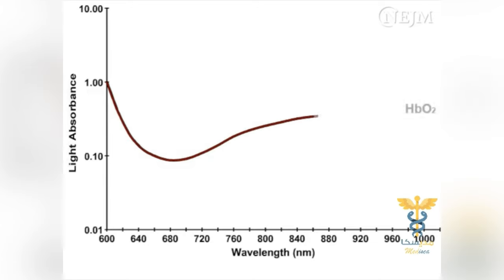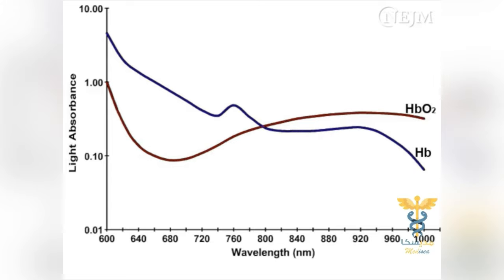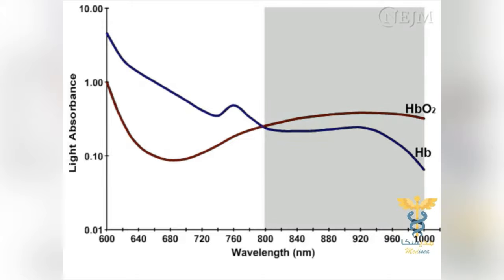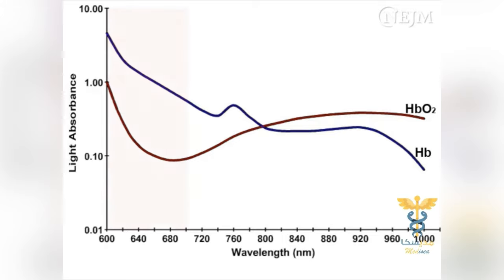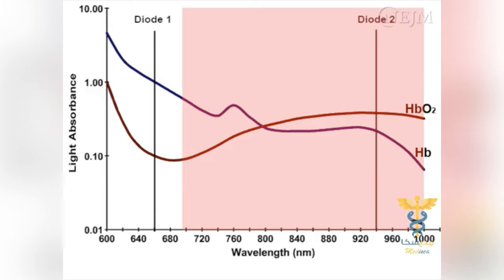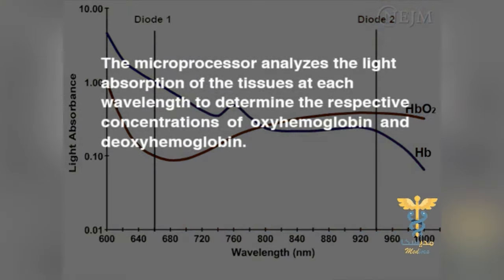Pulse oximeters function on the principle that oxygenated and deoxygenated hemoglobin absorb red and infrared light differently. The light absorption of deoxyhemoglobin is greater at wavelengths of 600 to 800 nanometers, while the light absorption of oxyhemoglobin is greater at wavelengths of 800 to 1,000 nanometers. One light-emitting diode emits light in the red spectrum at a wavelength of 660 nanometers, at which the light absorption of deoxyhemoglobin is greater than that of oxyhemoglobin. The other diode emits light in the infrared spectrum at a wavelength of 940 nanometers, at which oxyhemoglobin absorbs more light than deoxyhemoglobin. The microprocessor analyzes the light absorption of the tissues at each wavelength to determine the respective concentrations of oxyhemoglobin and deoxyhemoglobin.